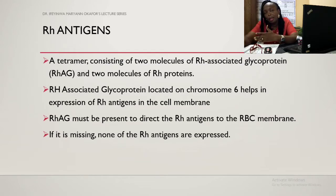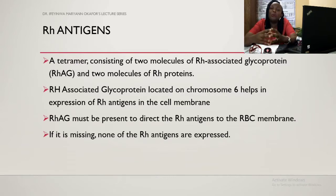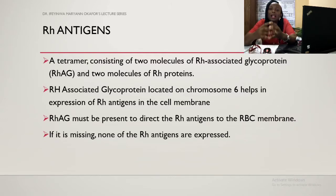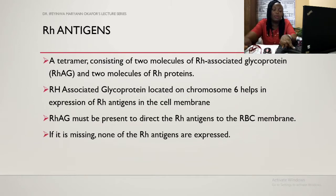The RH antigens form a tetrad consisting of two molecules of RH-associated glycoprotein and two molecules of RH proteins. This RH-associated glycoprotein is located on chromosome 6, and its primary function is to help in expression of RH antigens in the cell membrane. RH-associated glycoprotein must be present to direct the RH antigens to the cell membrane; if it is missing, none of the RH antigens can be expressed on the red blood cell membrane.